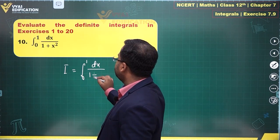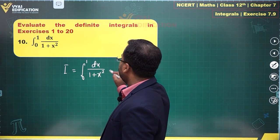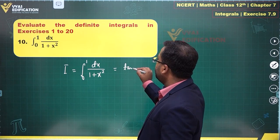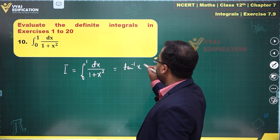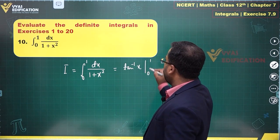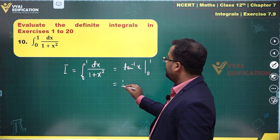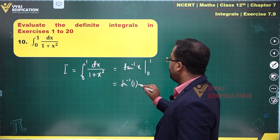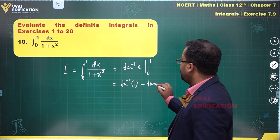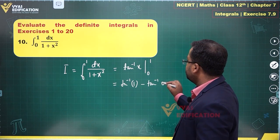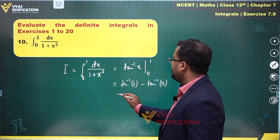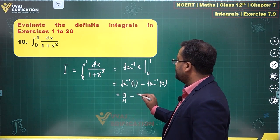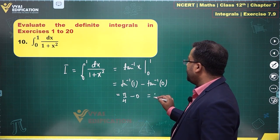The integral from 0 to 1 of dx/(1 + x²) becomes equal to tan inverse x evaluated from 0 to 1. This gives tan inverse 1 minus tan inverse 0, which is π/4 minus 0.